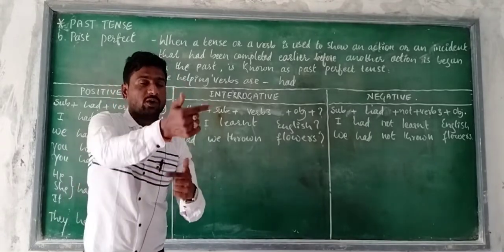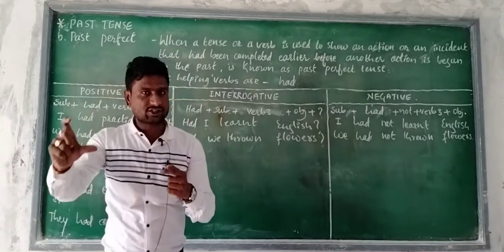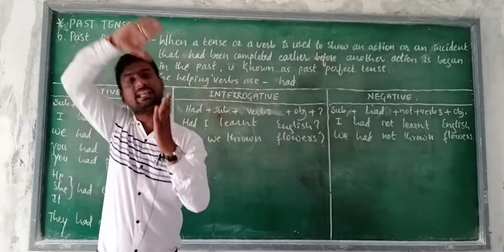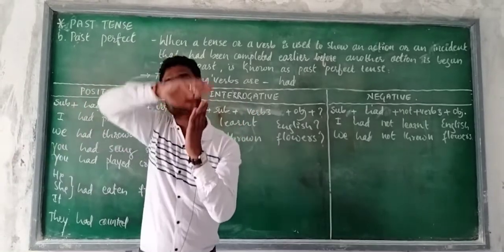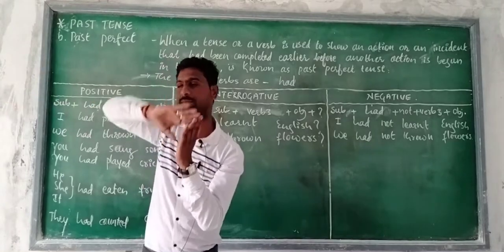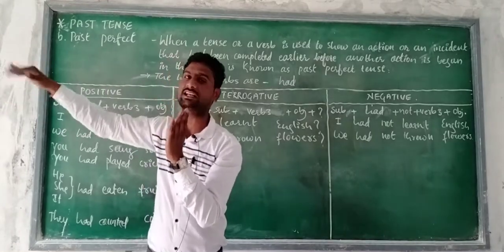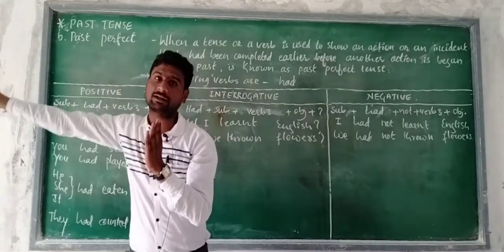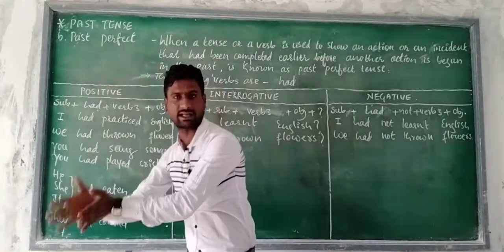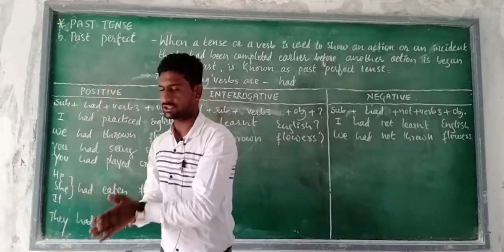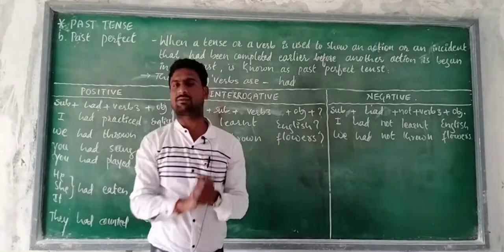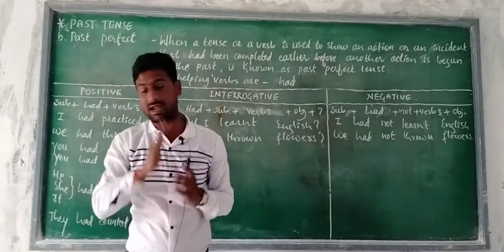Once again: when a tense or a verb is used to show an action or an incident that had been completed earlier, before another action is begun in the past — that is known as Past Perfect tense.